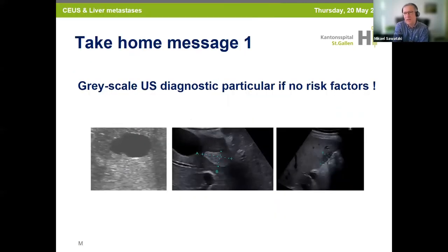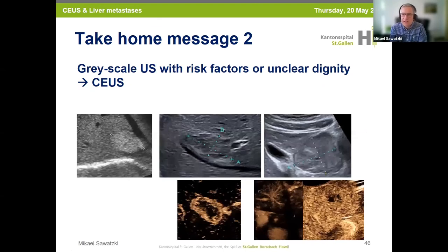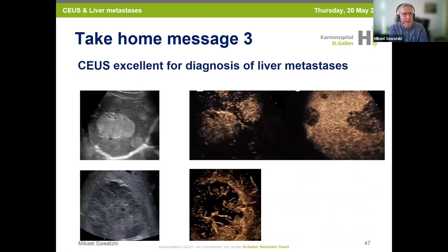The take-home messages: grayscale ultrasound is diagnostic particularly in patients with no risk factors — for example, focal fat infiltration. Grayscale ultrasound with risk factors or unclear dignity needs CEUS. In a young patient without risk factors, a hyperechogenic lesion is likely a hemangioma; in an older patient with risk factors, it could be hypoechogenic metastasis. CEUS is excellent for diagnosis of liver metastasis with the typical wash-in and wash-out pattern. It is also helpful in necrotic areas for guiding biopsy or ablative therapy. Thank you for your attention.